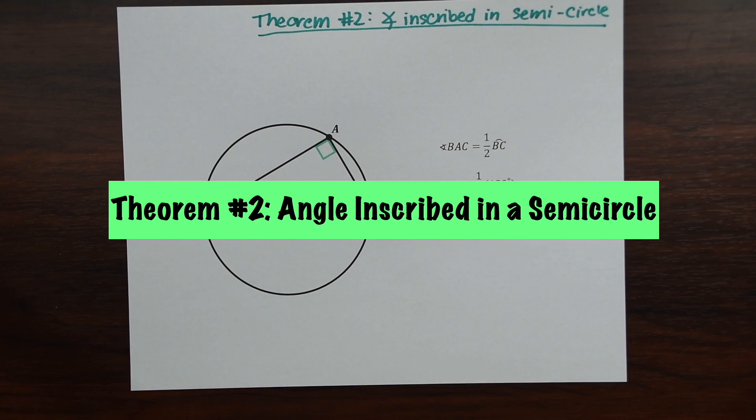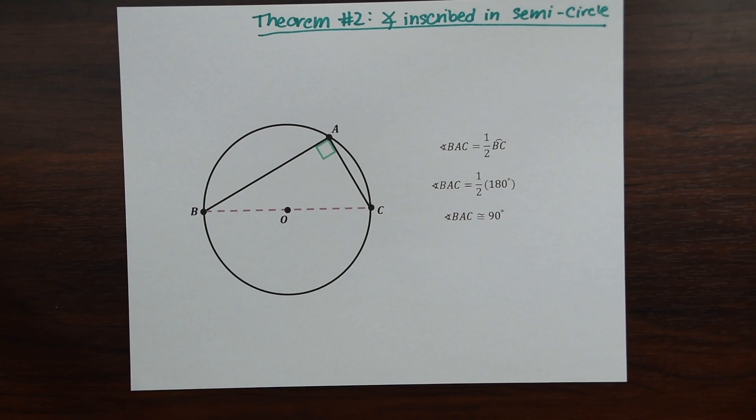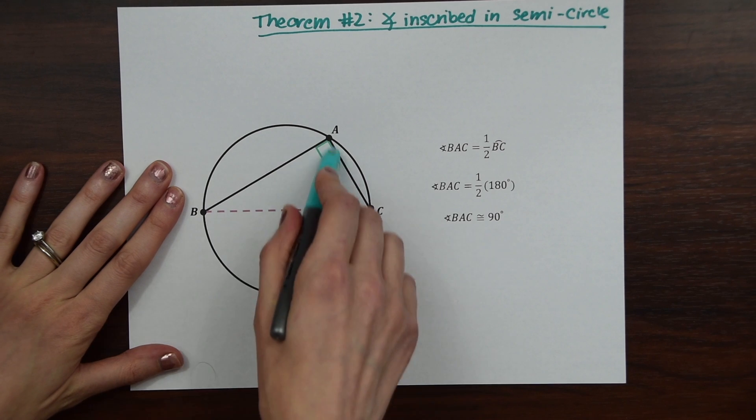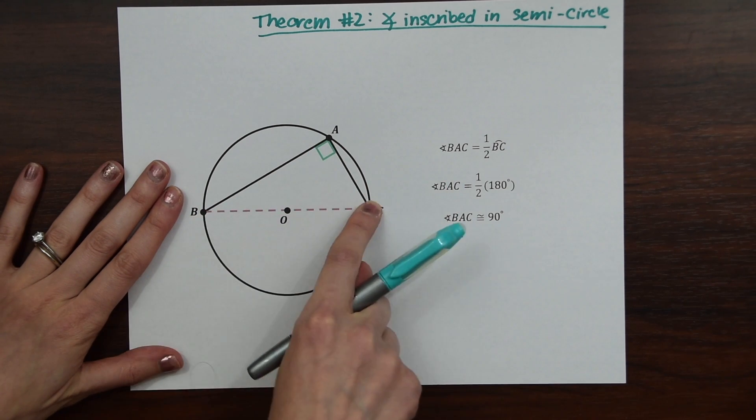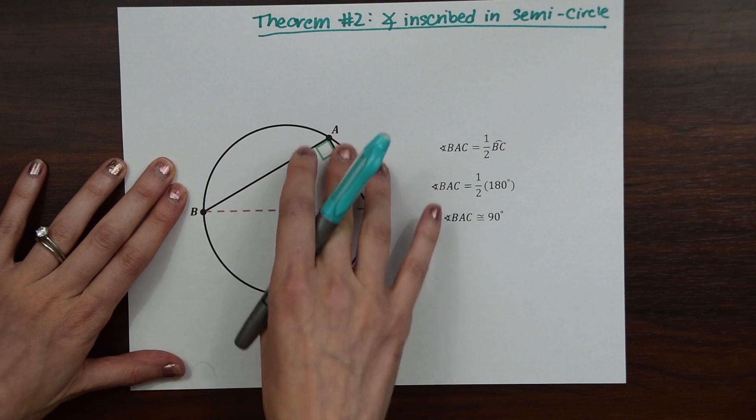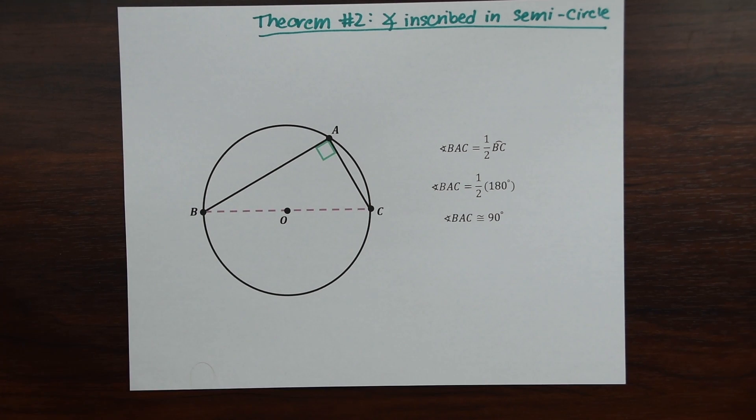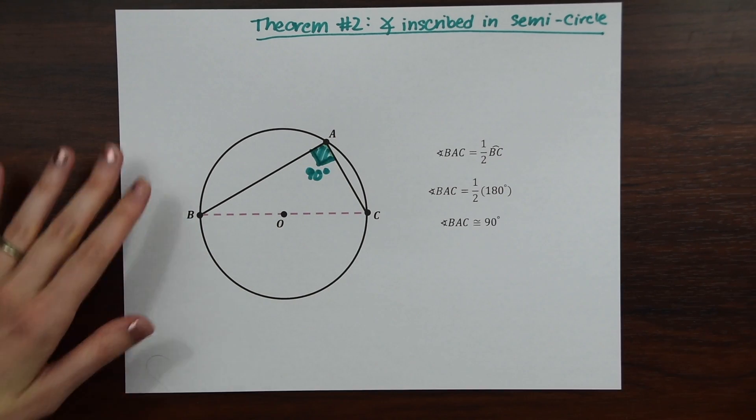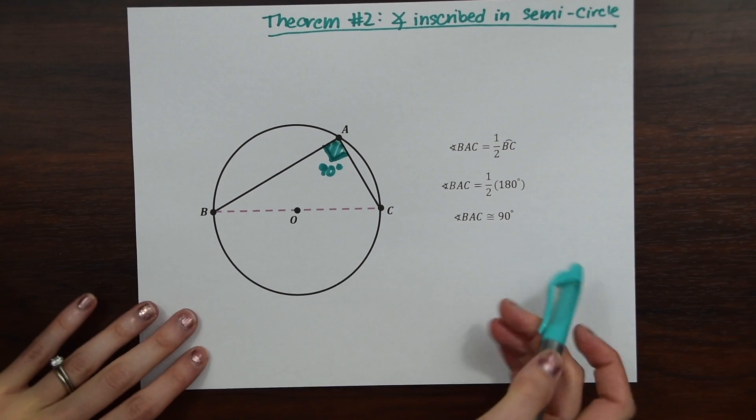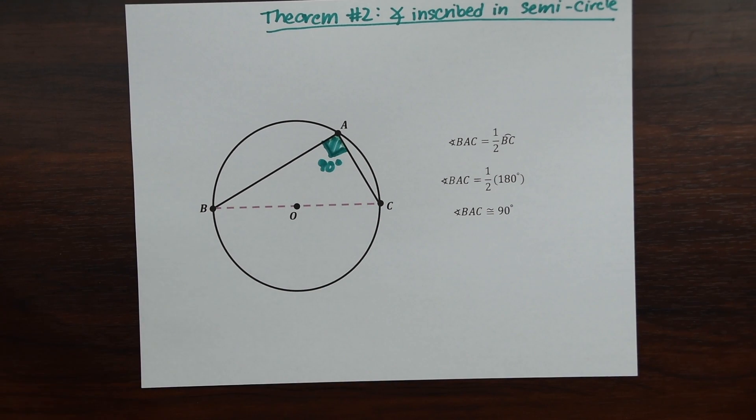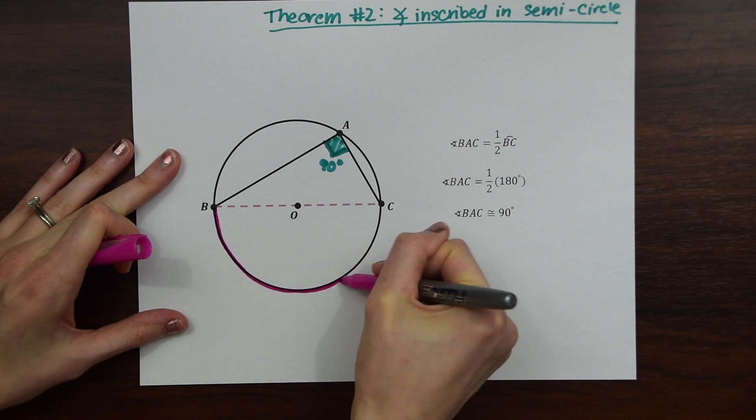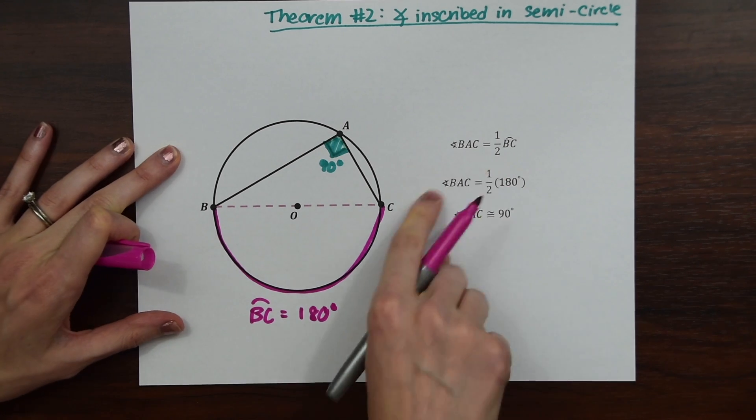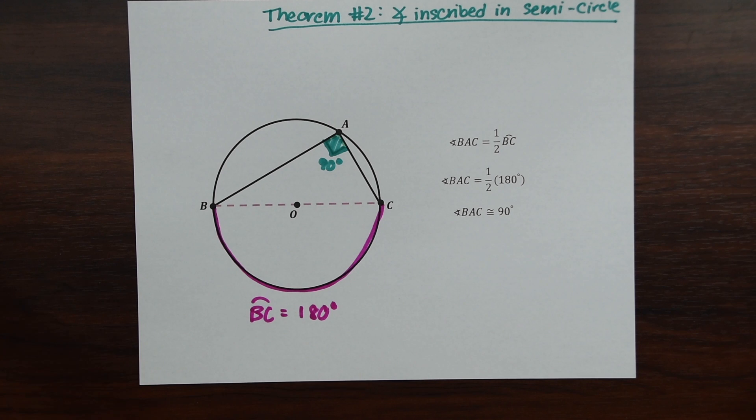Our next theorem is an angle inscribed in a semicircle. In a circle, when an angle is inscribed by a semicircle, it forms a 90 degree angle. So notice that this angle that is formed here by these two chords takes up half the circle, BC is a diameter. Because of that, we can infer with this theorem that this forms a 90 degree angle. So just a little background of where that comes from, if you think about half the circle and its value, the arc of BC that it's covering, arc BC is going to be equal to 180 degrees, right? So half of that, based on our inscribed angle theorem, half of that is 90 degrees. So that's where this theorem comes from.